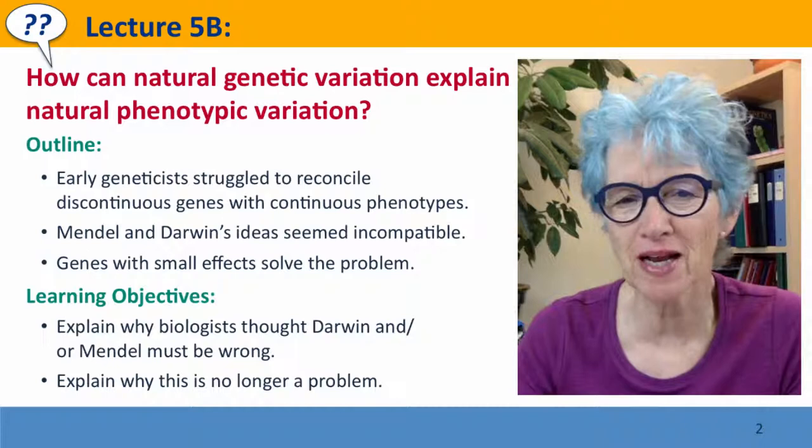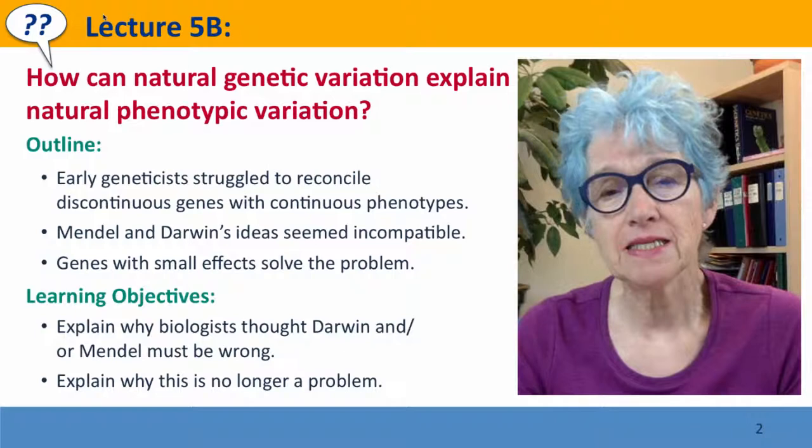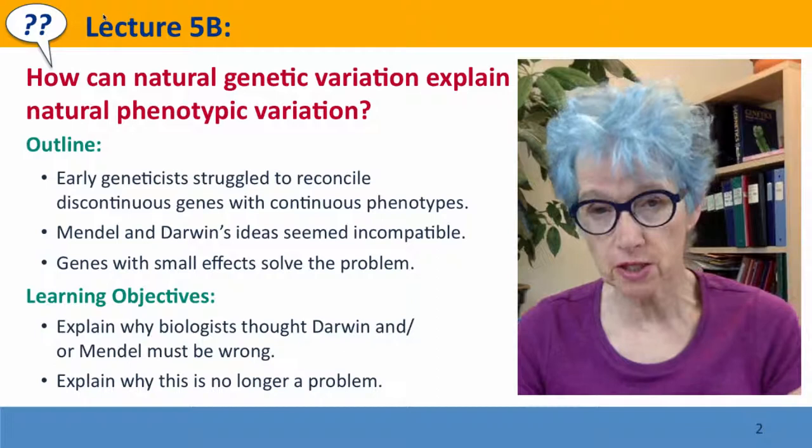Hi everyone, welcome back to Useful Genetics. This is lecture 5b, where we're going to take, for once, a somewhat historical view of a problem — the problem being how to reconcile the discontinuous nature of genetic variation with the continuous nature of natural phenotypic variation.